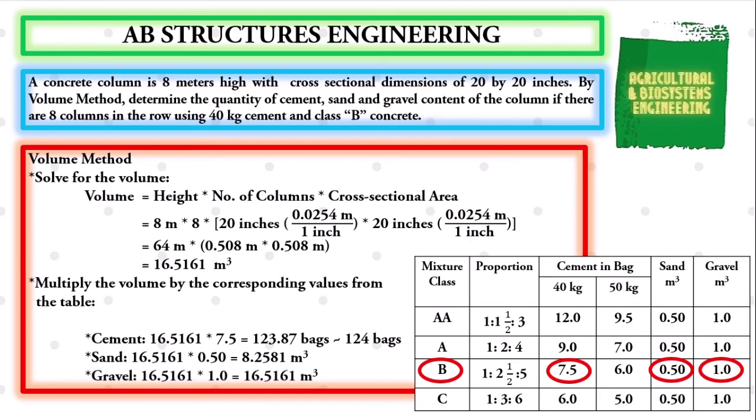Finally, the gravel quantity. We have the volume of 16.5161 times 1.0, giving us an answer of 16.5161 cubic meters.